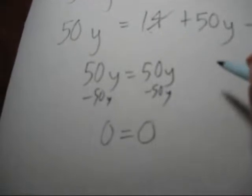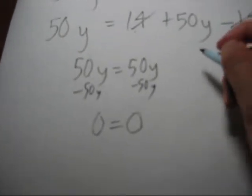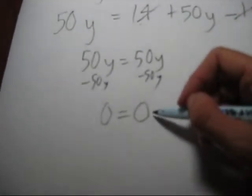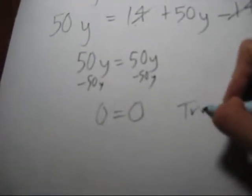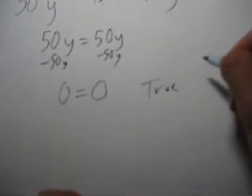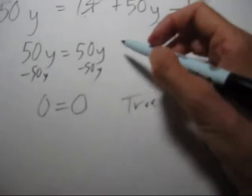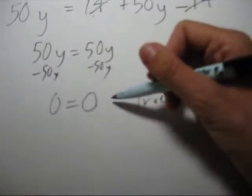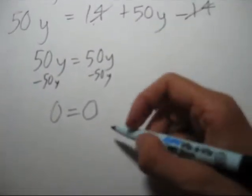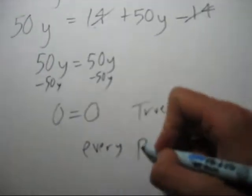So what do we do if the variable disappears? Well, 0 equals 0 is always true. It's a true statement, which means that no matter what y I put in, it will always be true. That means every y works.